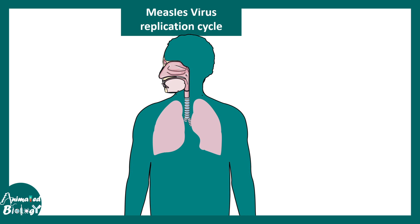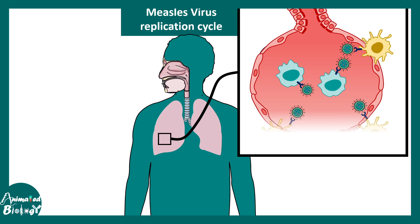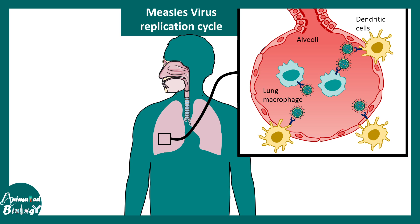Measles virus enters through respiratory droplets and infects the respiratory tract, with the lungs being affected first. Zooming into one alveolus, macrophages and dendritic cells in the lungs express a cell-surface receptor known as SLAM. The viral H protein interacts with SLAM, allowing the virus to enter these macrophages or dendritic cells.